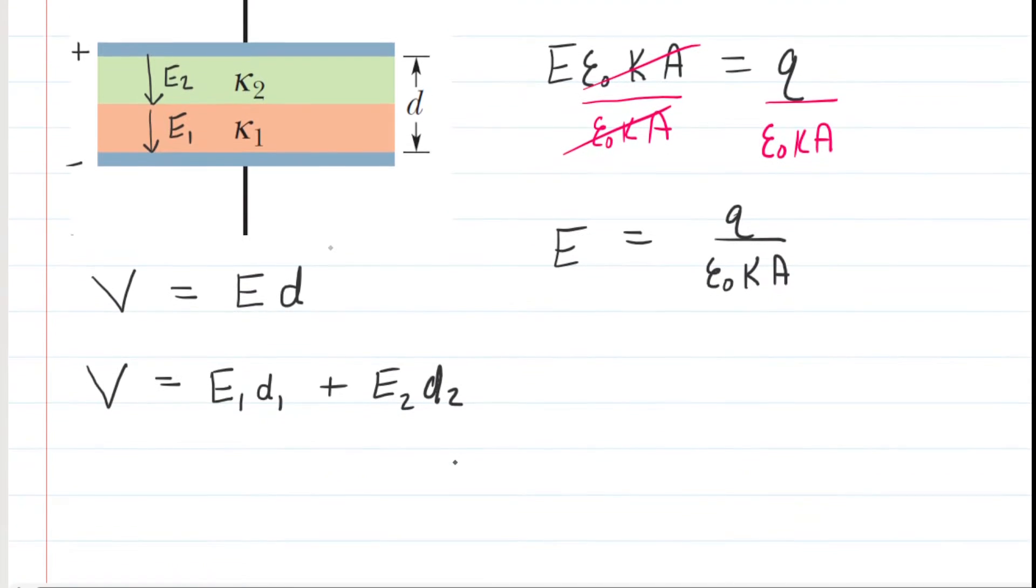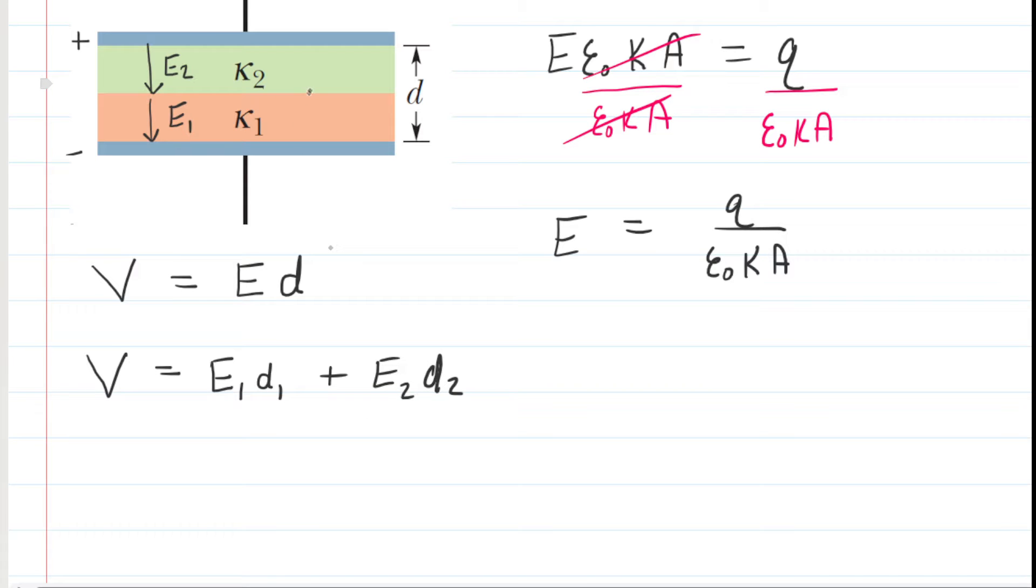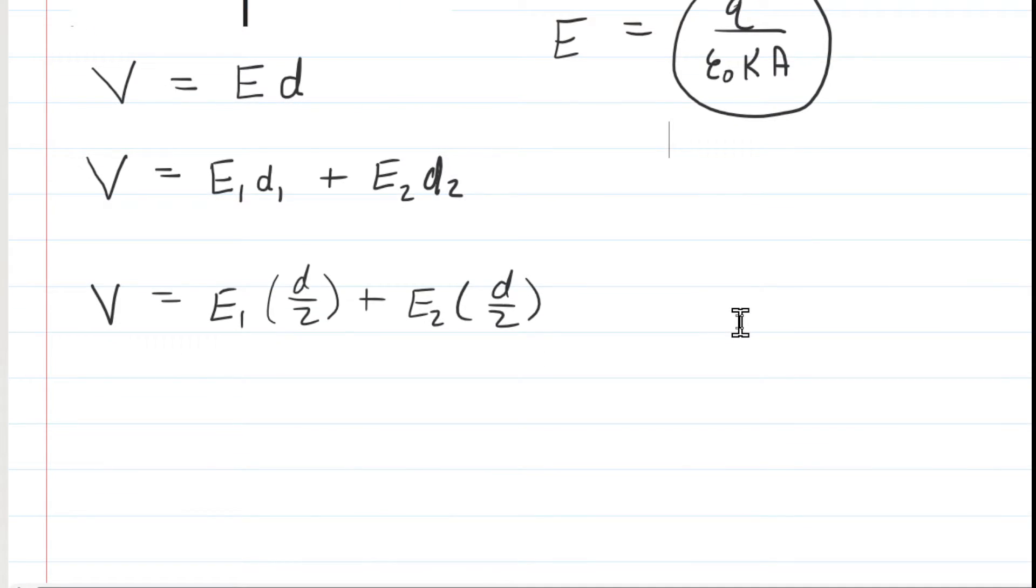When it comes to D sub 1, that would be the distance represented by this layer of the dielectric. So that layer has a distance of d divided by 2. And then for D sub 2, it's the same idea, that layer has a distance of d divided by 2 as well. So for both D sub 1 and D sub 2, we're going to fill in d divided by 2. And then for the E sub 1 and the E sub 2, those electric field magnitudes, we're going to be using this expression with a subscript of either 1 or 2 on the kappa value. So let's go ahead and make that substitution.